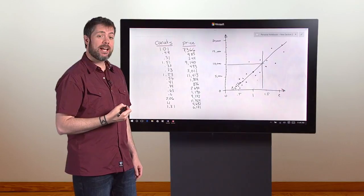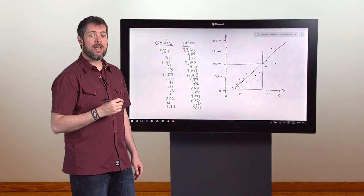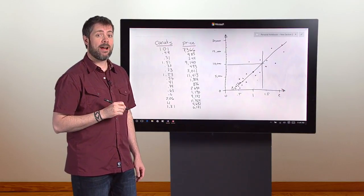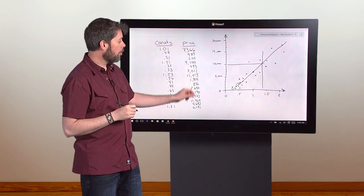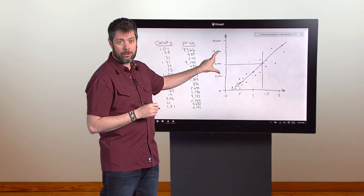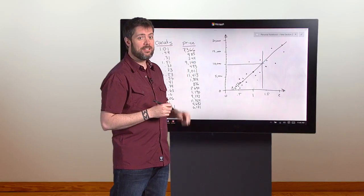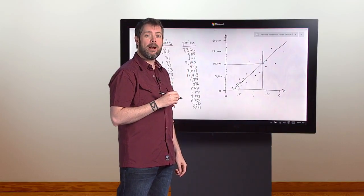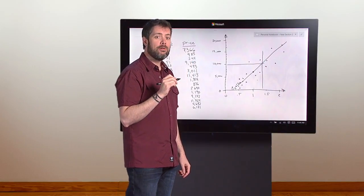It's natural to wonder how precise this prediction is. It's useful to know whether the 1.35 carat diamond will be very close to $10,000 or a lot higher or lower. To figure this out, let's draw an envelope around the regression line that includes most of the dots.